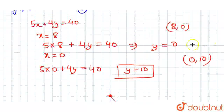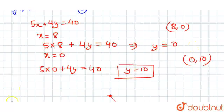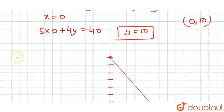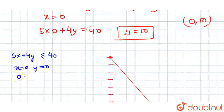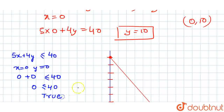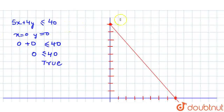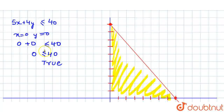Now we will find the inequality region by putting x equals 0 and y equals 0 in the equation 5x plus 4y less than or equals to 40. This gives 0 plus 0 less than or equals to 40, which is 0 less than or equals to 40 — this is true. So the solution set of the first equation contains the origin, and the shaded region will be the side containing the origin.